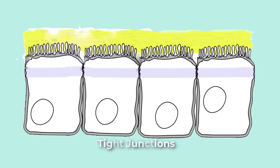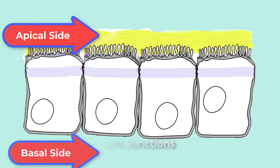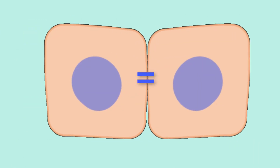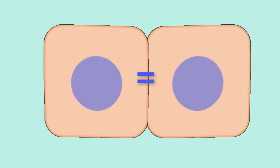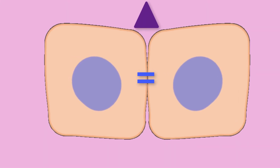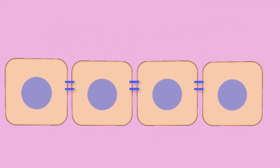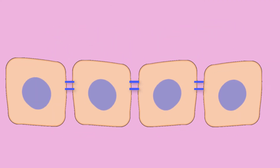The tight junction separates cells into apical and basal compartments. When two adjacent epithelial cells form a tight junction, there is no extracellular space between them, and the movement of substances through the extracellular space between the cells becomes blocked. This enables the epithelia to act as selective barriers.